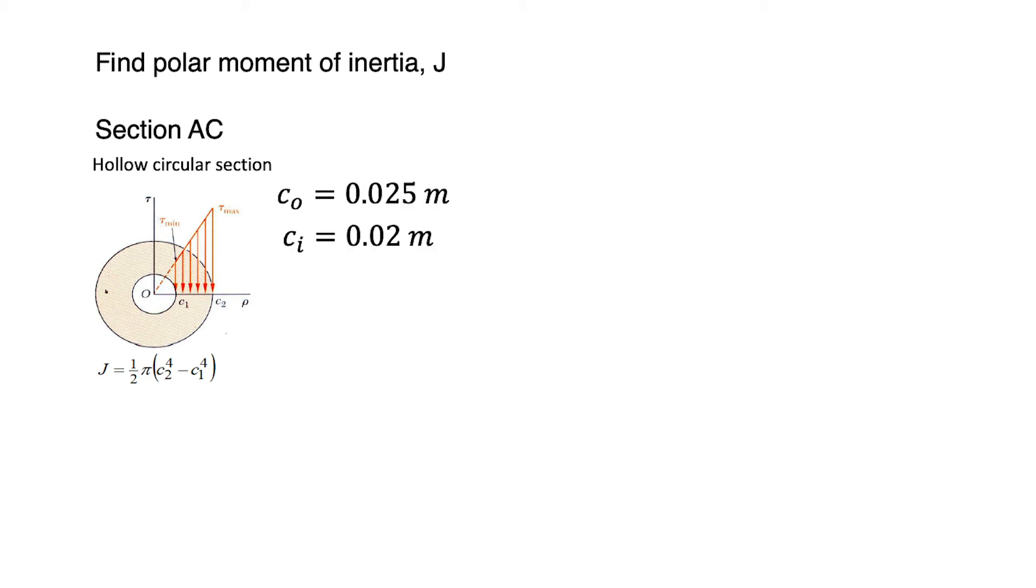Then find the polar moment of inertia. For section AC, it is hollow circular section. Then we use J = (π/2)(Co^4 - Ci^4). We have outer radius is 0.025 meters and inner radius is 0.02 meters. Then we get JAC = 3.62 × 10^-7 m^4.